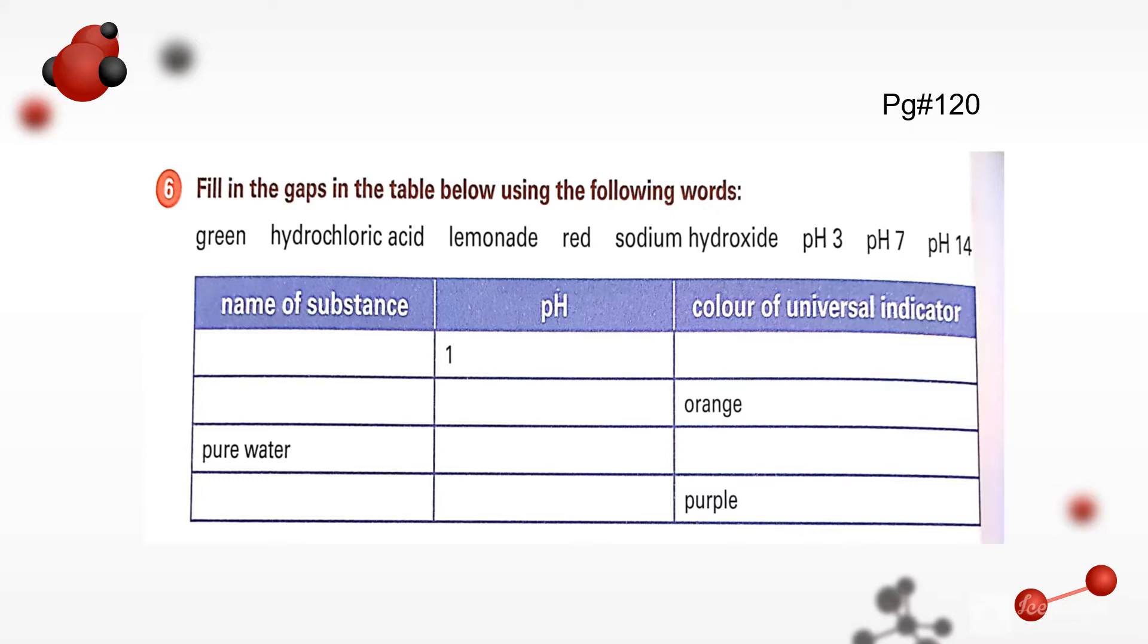Fill in the gaps in the table below using the following words: green, hydrochloric acid, lemonade, red, sodium hydroxide, pH 3, pH 7, and pH 14. So we will fill the gaps in this table. pH 1, the name of the substance is concentrated or strong acid, and that is what's called hydrochloric acid. And the color of hydrochloric acid in the universal indicator is red.